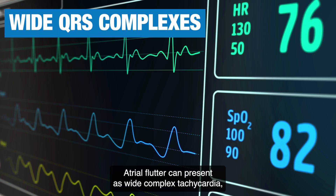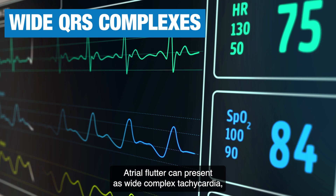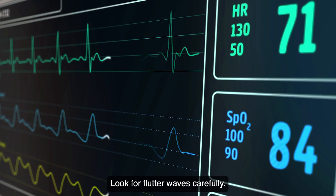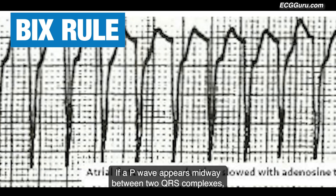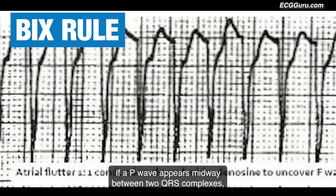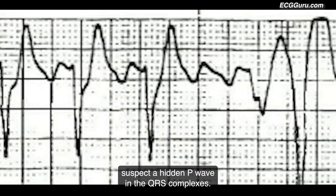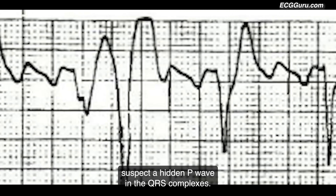Atrial flutter can present as wide complex tachycardia, especially with hyperkalemia — look for flutter waves carefully. If a P wave appears midway between two QRS complexes, suspect a hidden P wave within the QRS complexes.